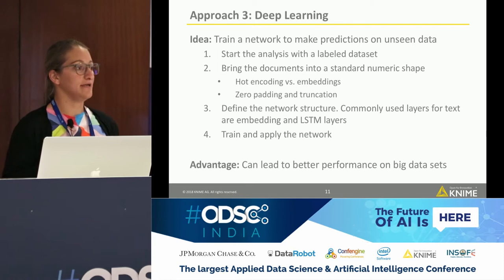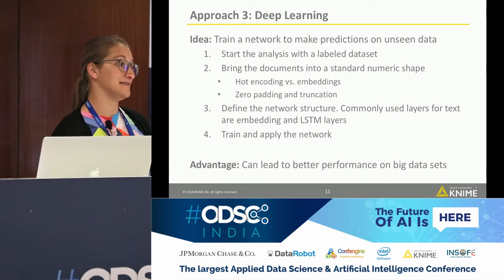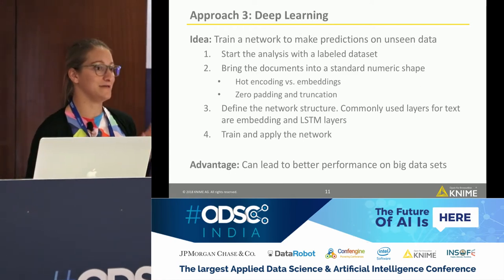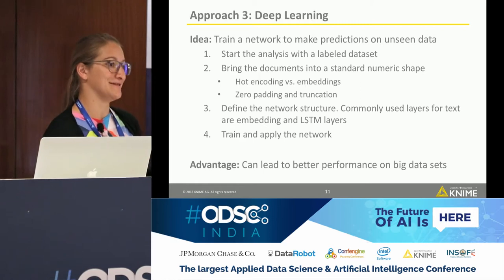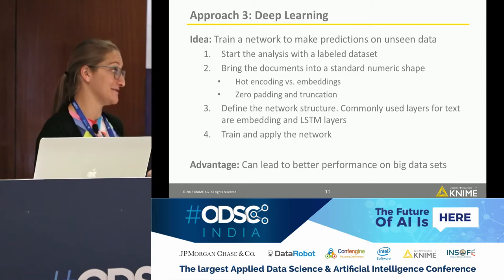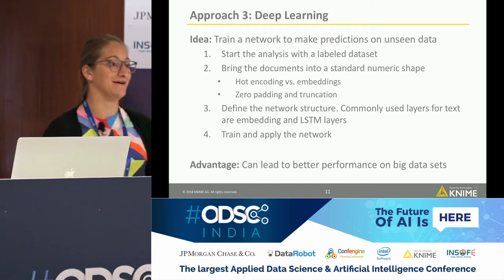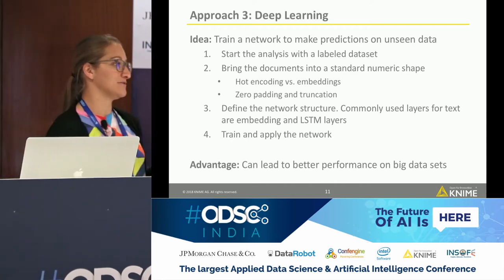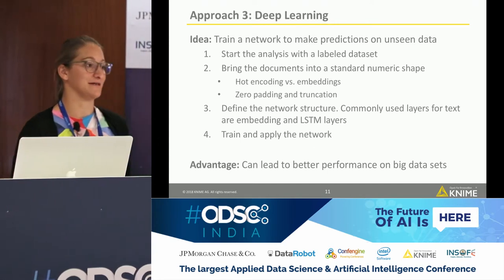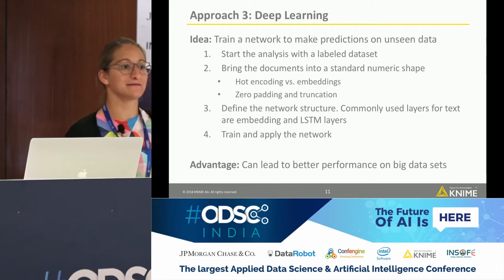The advantage of deep learning over basic machine learning is that with really big datasets it can lead to better results. But deep learning really only gets better results if you have a lot of data. To train a network from scratch you need a lot of data — it doesn't work on just 100 samples. Otherwise, you can take pre-trained networks and fine-tune them with your data.